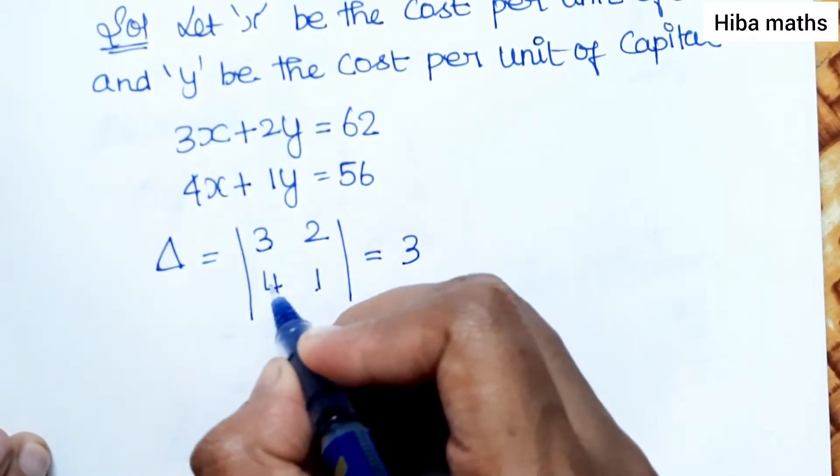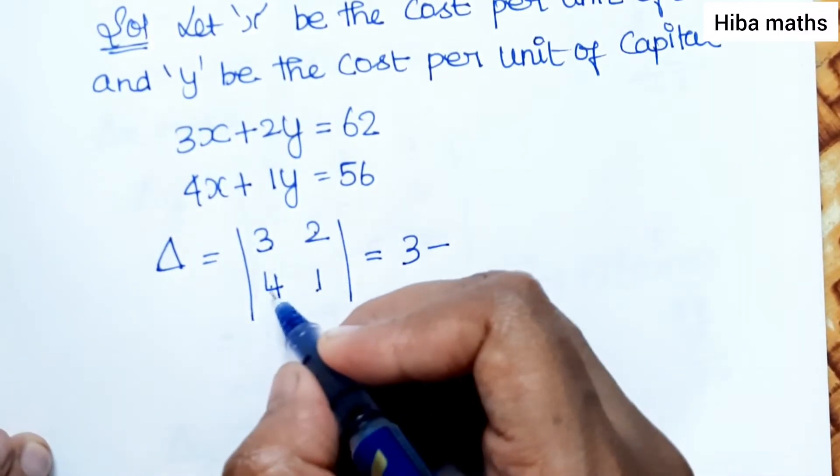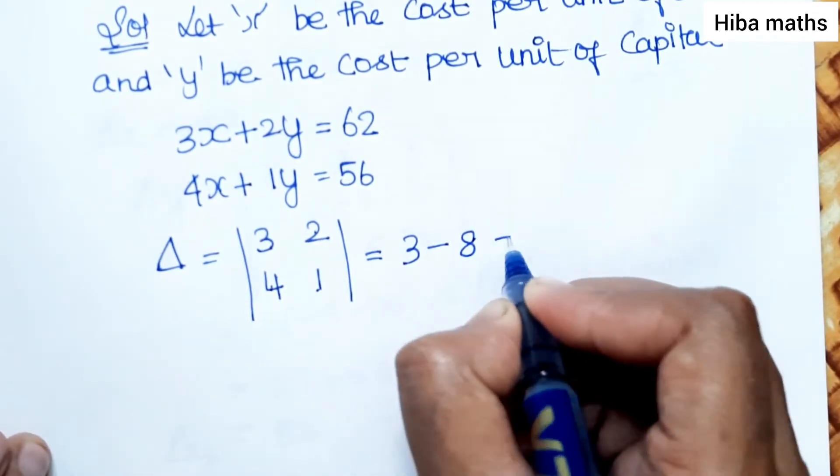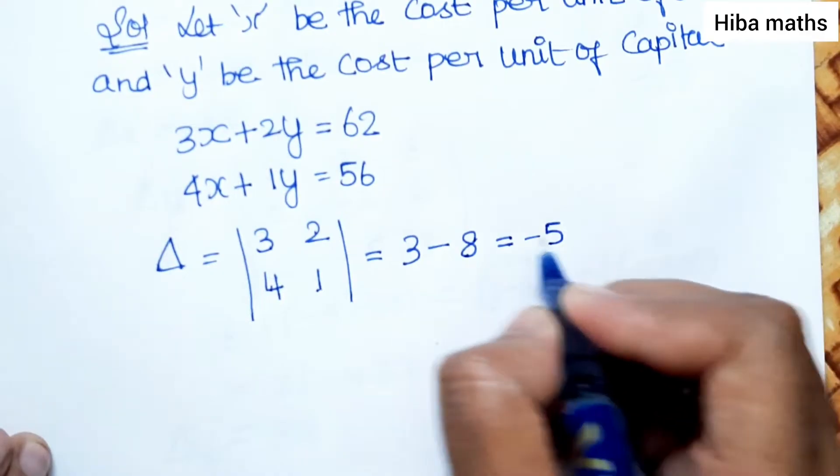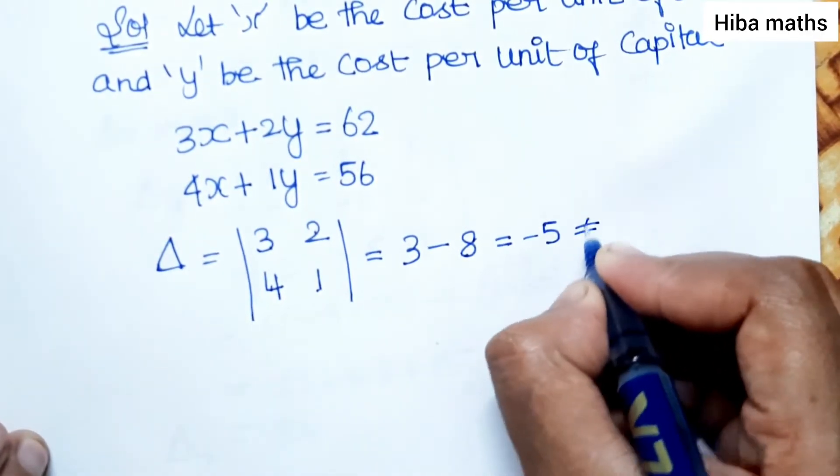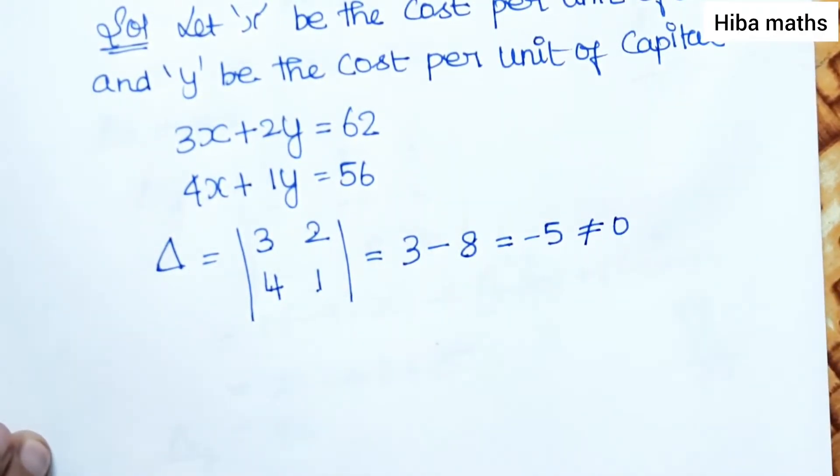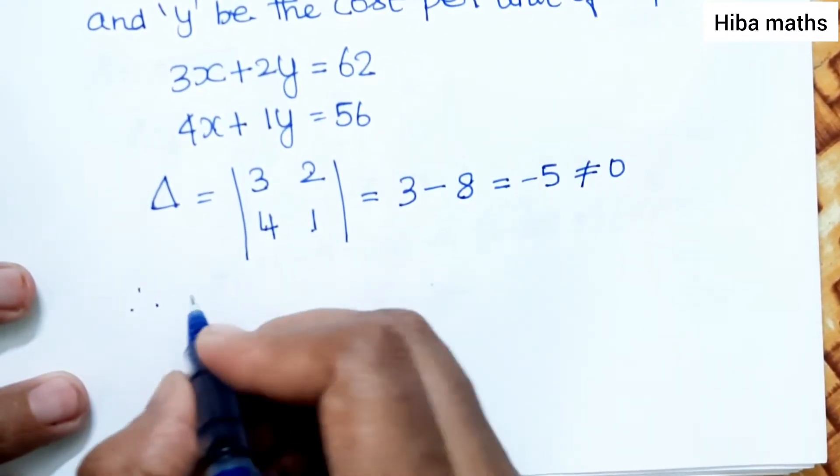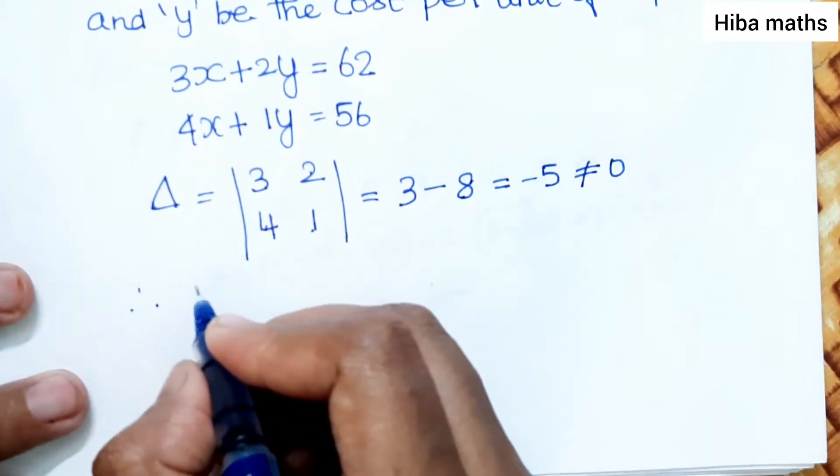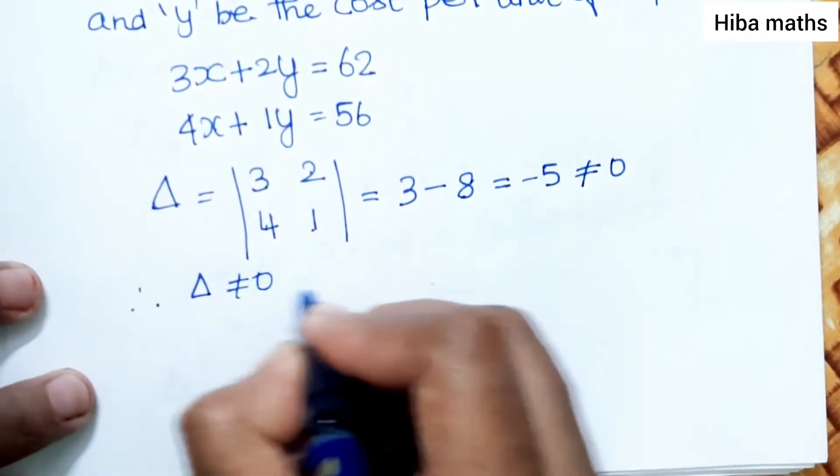Delta equals 3 times 1 minus 4 times 2, which is 3 minus 8 equals minus 5. Since delta is not equal to 0, therefore we can apply Cramer's rule.